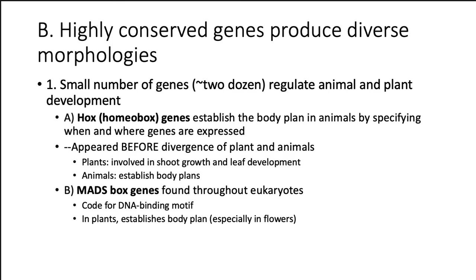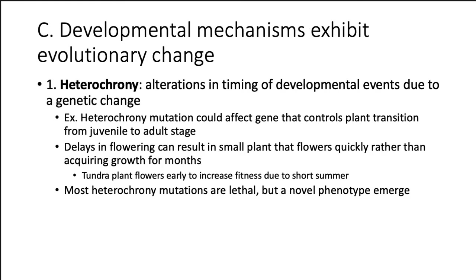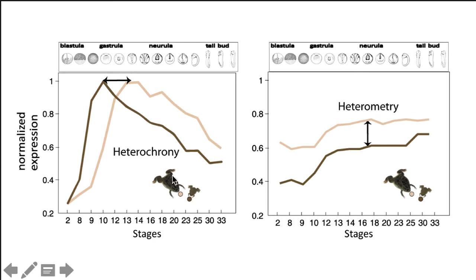Highly conserved genes help produce diverse morphologies, and developmental mechanisms can exhibit evolutionary change. One key term is heterochrony — alterations in the timing of developmental events due to genetic change. If a mutation occurs in one of these genes, it could control how a plant transitions from a juvenile to adult stage. For example, mutations in heterochrony could delay flowering, which might actually be beneficial in some environments. However, most heterochrony mutations are lethal. When they do occur beneficially, a new phenotype can emerge.